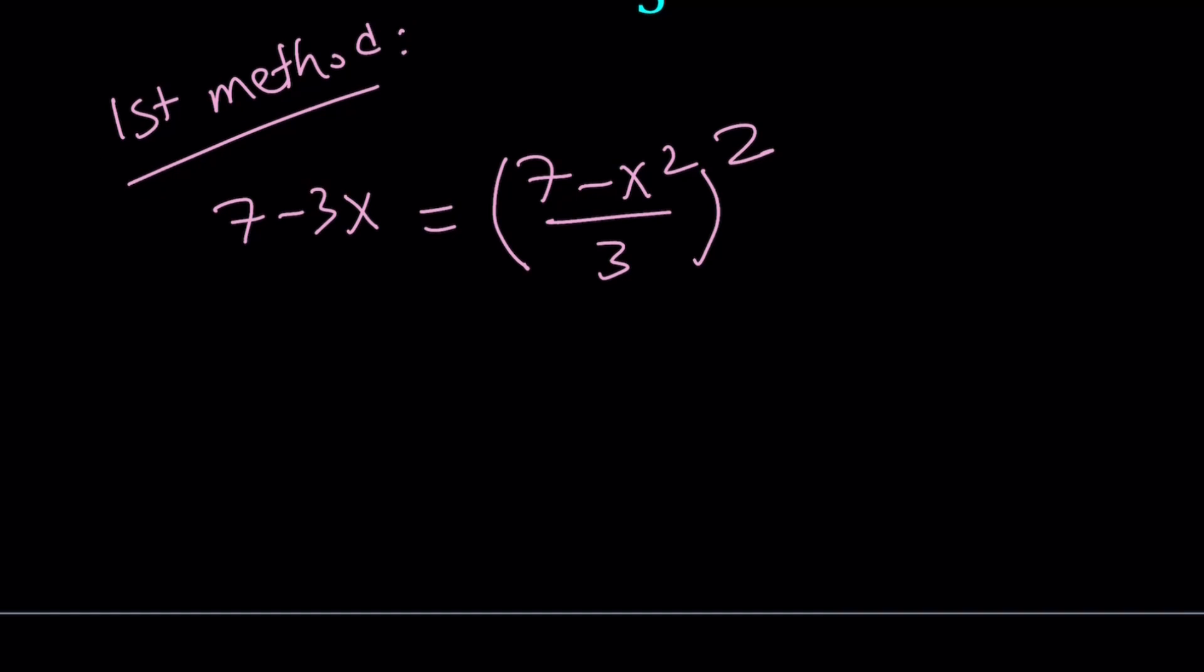To square that, we can just square the numerator which is 49 minus 14x squared plus x to the fourth divided by 9. The top is basically a minus b quantity squared.